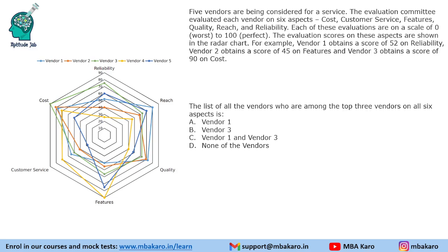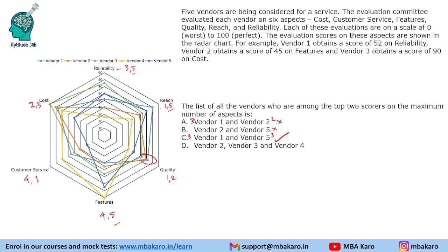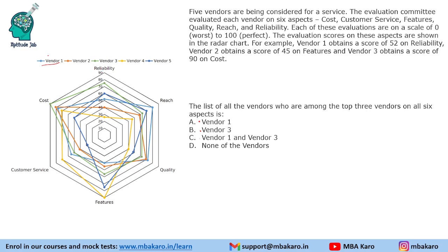The fourth question asks for the list of all vendors who are among the top three vendors on all six aspects. The options are vendor one, vendor three, both, or none. We know from the previous question that vendor one was in the top two on only three occasions — not all six. Checking vendor one specifically in features, vendor one is not in the top three, so vendor one is definitely not the answer.